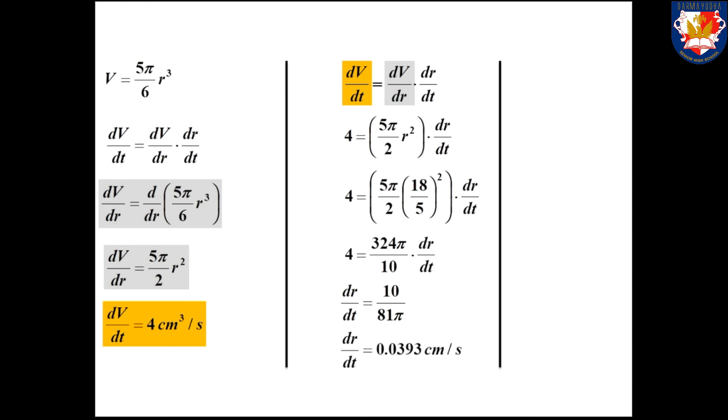Simplifying gives dr/dt approximately equal to 0.0393 cm per second. To understand this topic better, please practise through the assignment I have given you, and submit it on time in 8model. See you!